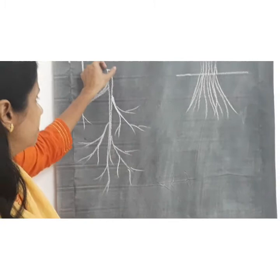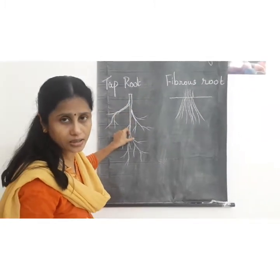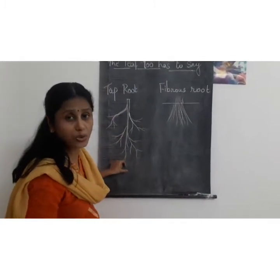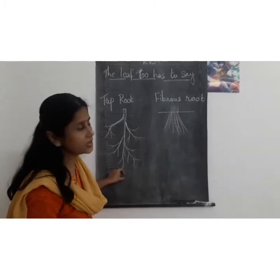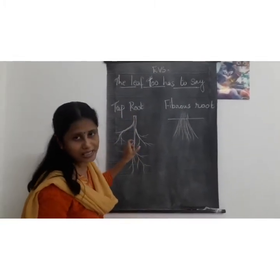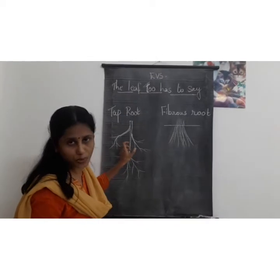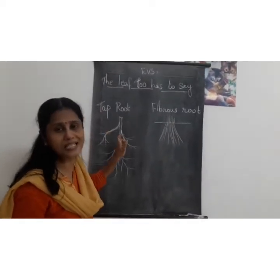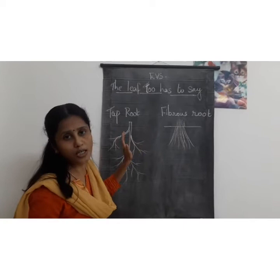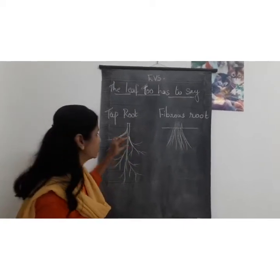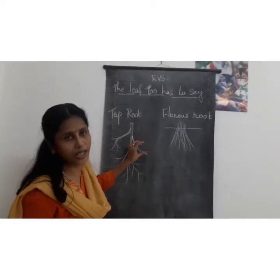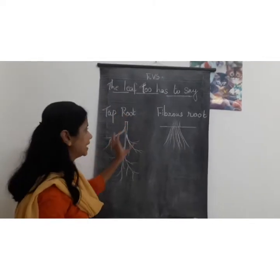This main root is thick and it goes deep into the soil. So this is about tap root. Tap root consists of one main root with smaller roots growing from the main root.